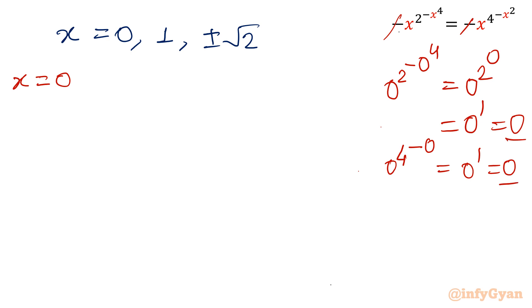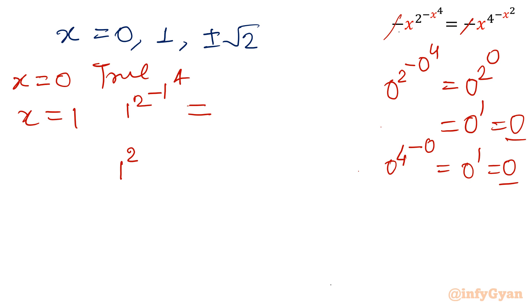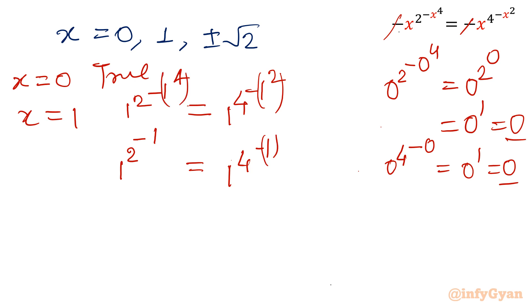For x equal to 1: left side gives 1^(2^(-1^4)) and right side 1^(4^(-1^2)), both simplify to 1 raised to some power, which equals 1 on both sides. Similarly, for plus/minus root 2, the same result follows. You can verify any value.